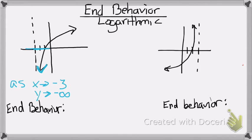Alright, looking at the right side of my graph. My x values, there's no boundaries, so it's approaching positive infinity.